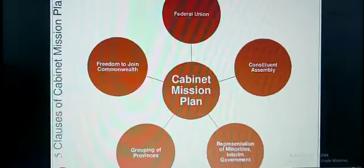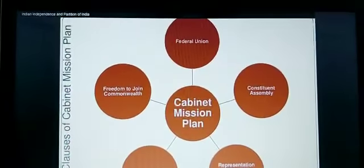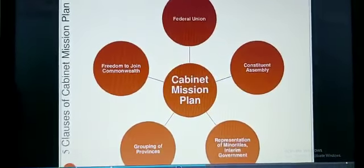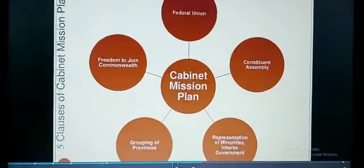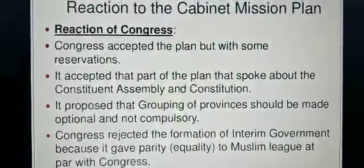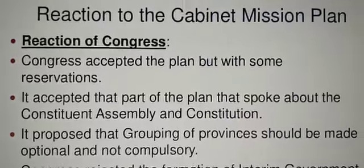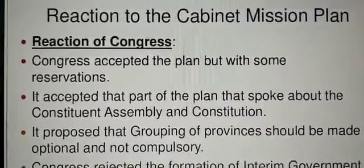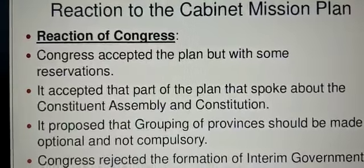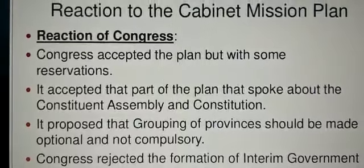A web chart has been given here so you can understand the clauses of the Cabinet Mission clearly — federal union, freedom to join the Commonwealth, grouping of provinces, representation of minorities, interim government, and constituent assembly. Now, what was the reaction to the Cabinet Mission? Congress accepted the plan but with some reservations; it accepted the part that spoke about the Constituent Assembly and constitution.